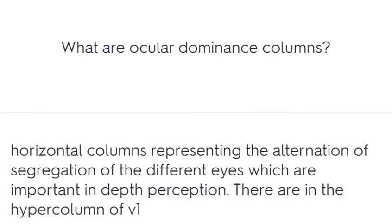What are ocular dominance columns? Horizontal columns representing the alternating segregation of the different eyes, which are important in depth perception. They are found in the hypercolumn of V1.